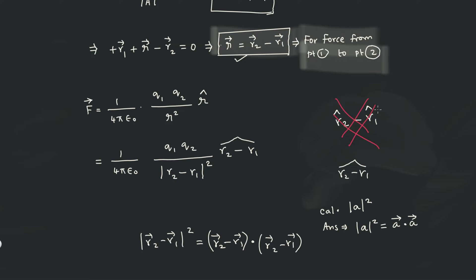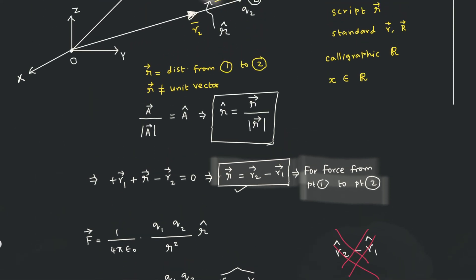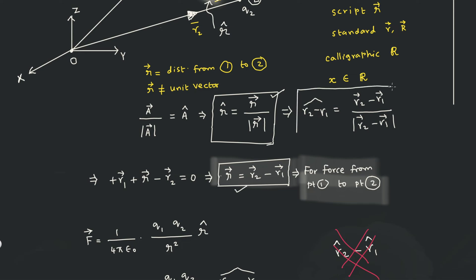The unit vector of (r2 − r1) equals the vector (r2 − r1) divided by the modulus of (r2 − r1). It may look like a lengthy expression but numerically it is simple — your job is only to find the unit vector of a given vector. The extra length comes because r2 − r1 is there. Both expressions (using script r or using r2 − r1 explicitly) are identical.